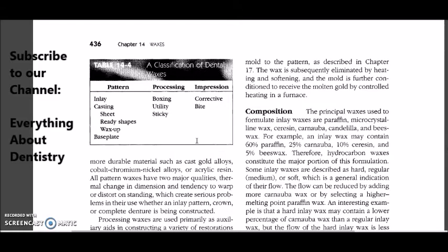The second category is processing wax. The first one includes boxing wax, then utility wax, and sticky wax. There is a small, easy mnemonic to remember. The processing waxes is BUS: boxing, utility, and sticky wax.